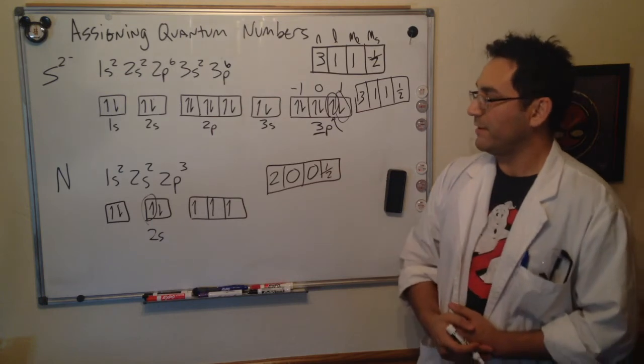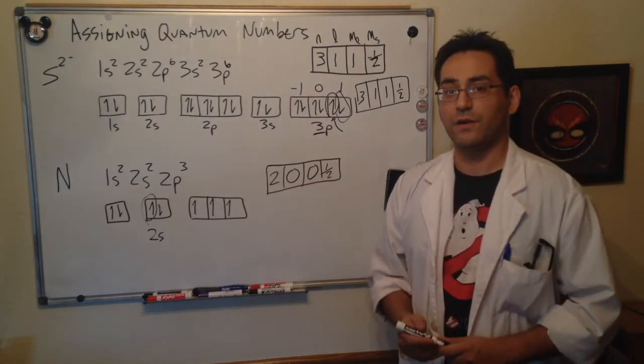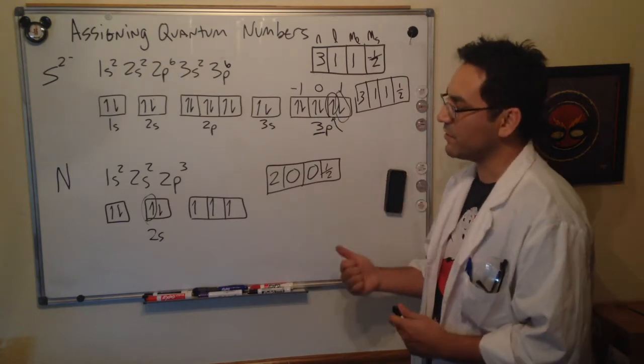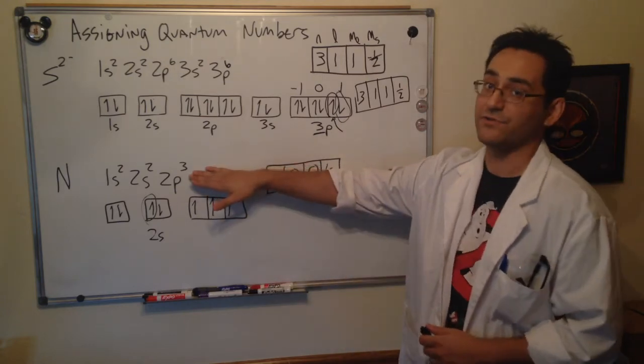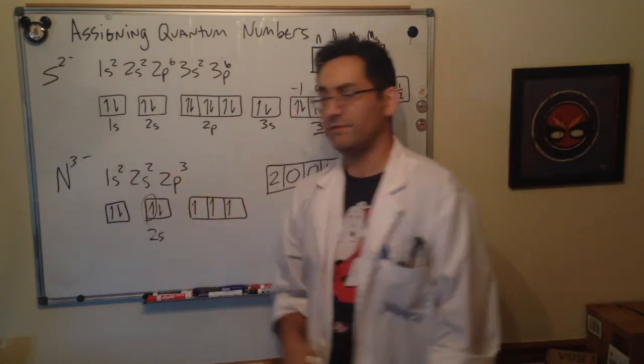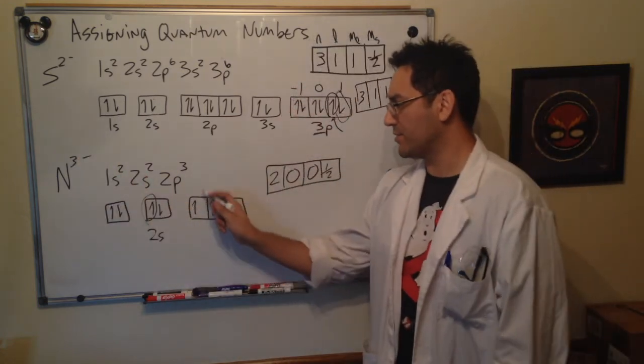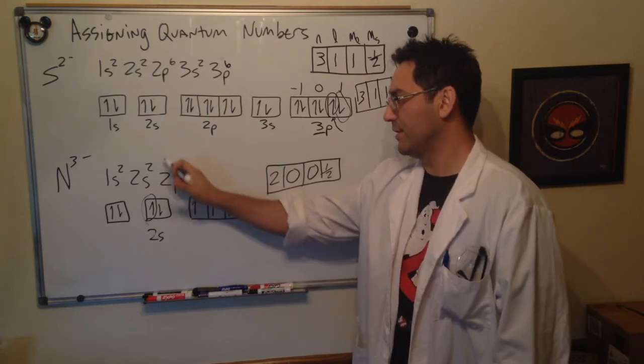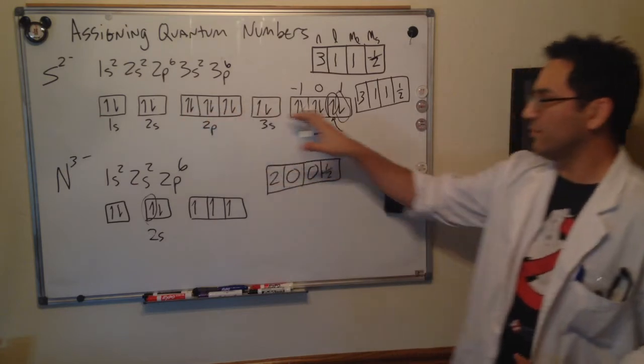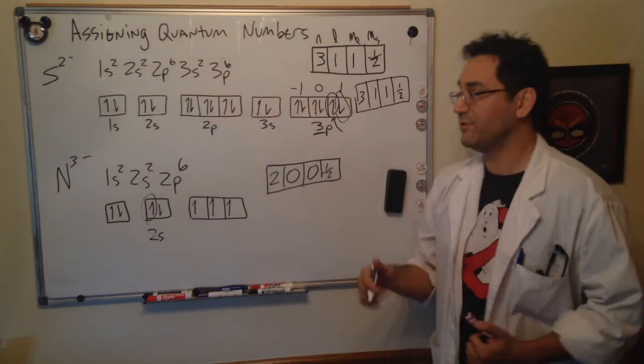This is how we assign quantum numbers to electrons. To recap, you want to start off with a correct electron configuration. That means if you're writing the ion nitrogen three minus, you want to make sure that this includes all of those electrons so that you can very accurately know which orbitals are going to be used to then assign quantum numbers.